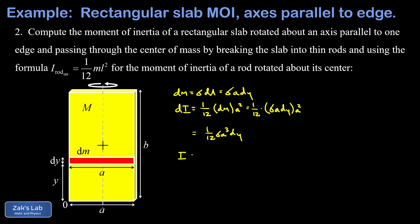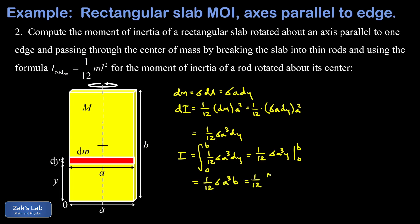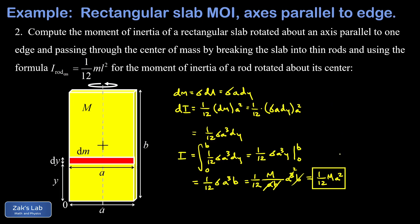We use an integral to add all the contributions as y goes from zero to b. The antiderivative is one-twelfth sigma·a³ times y, evaluated from zero to b, giving one-twelfth sigma·a³·b. Replacing sigma with M/(a·b), the b's cancel and one factor of a cancels, yielding one-twelfth Ma² — exactly as expected, because the distribution of mass relative to the rotation axis is the same as for a one-dimensional rod rotating about its center.